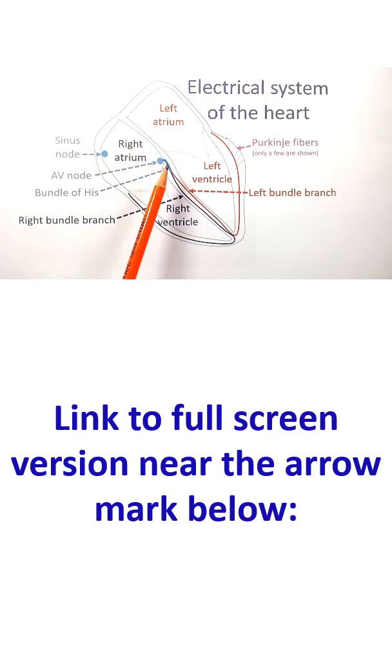There is something known as the fibrous skeleton of the heart which insulates the upper chambers from the lower chambers. This bundle penetrates the fibrous skeleton of the heart and reaches the interventricular septum.